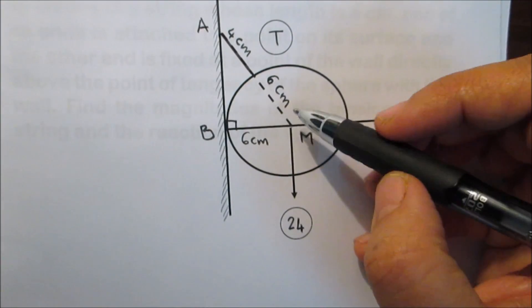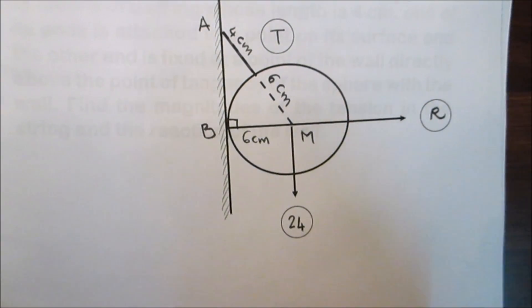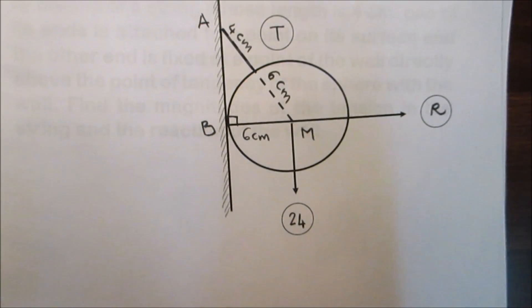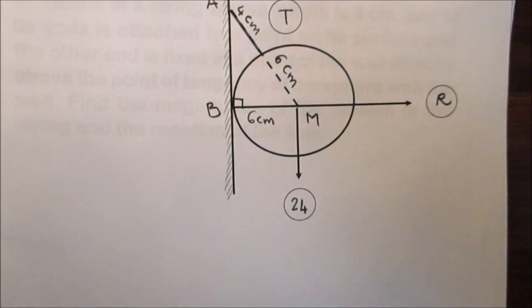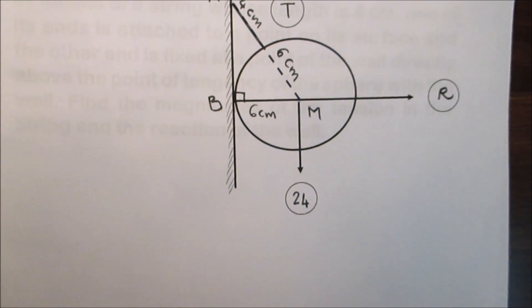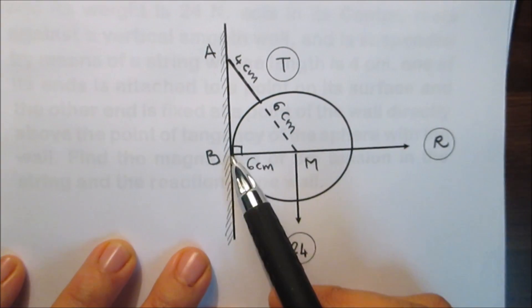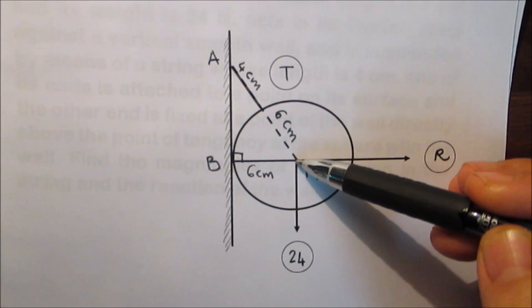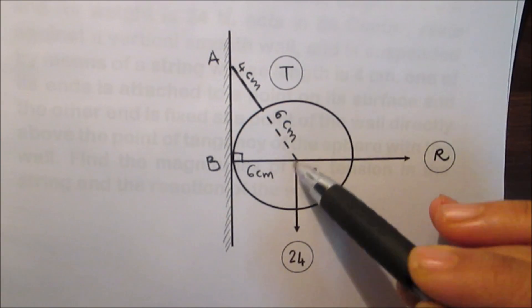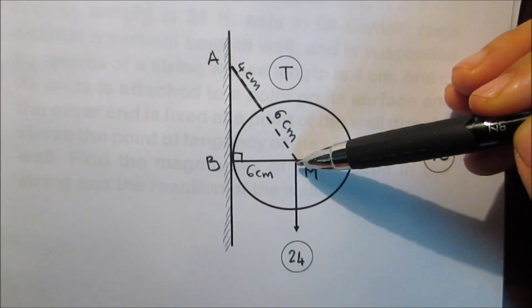The weight of the sphere is a vertical force going downward. The sphere rests on a vertical smooth wall. If a body rests on a smooth surface, the reaction force R is perpendicular to the surface. Here we have a smooth wall, so the reaction of the wall is horizontal. The weight is vertical and they meet at point M. By the rule, the tension in the string must also pass through the meeting point M.